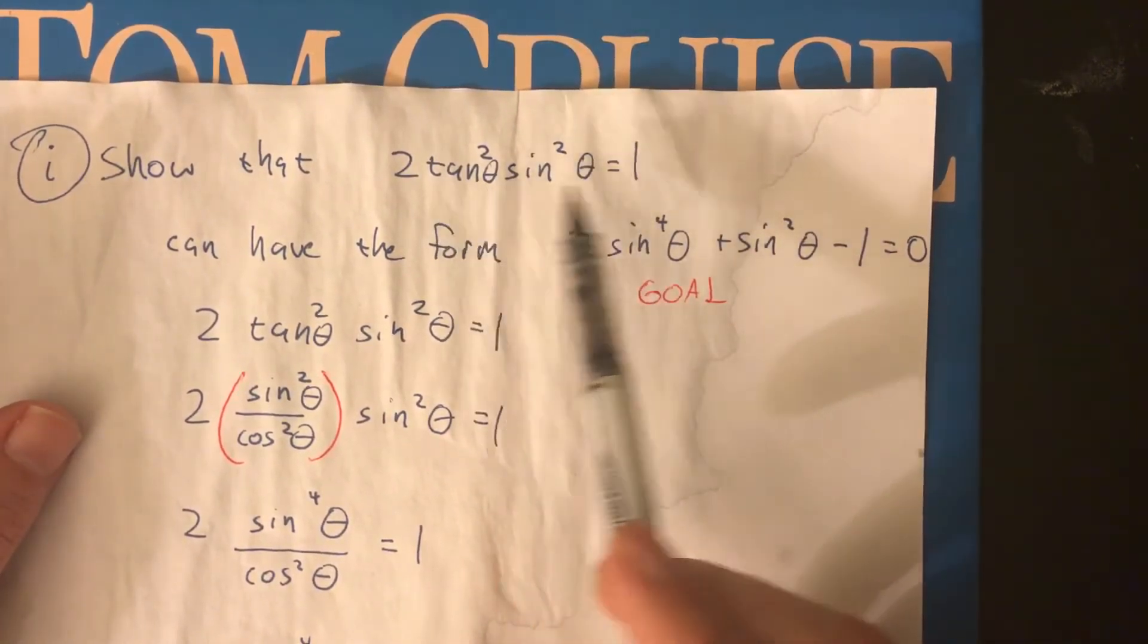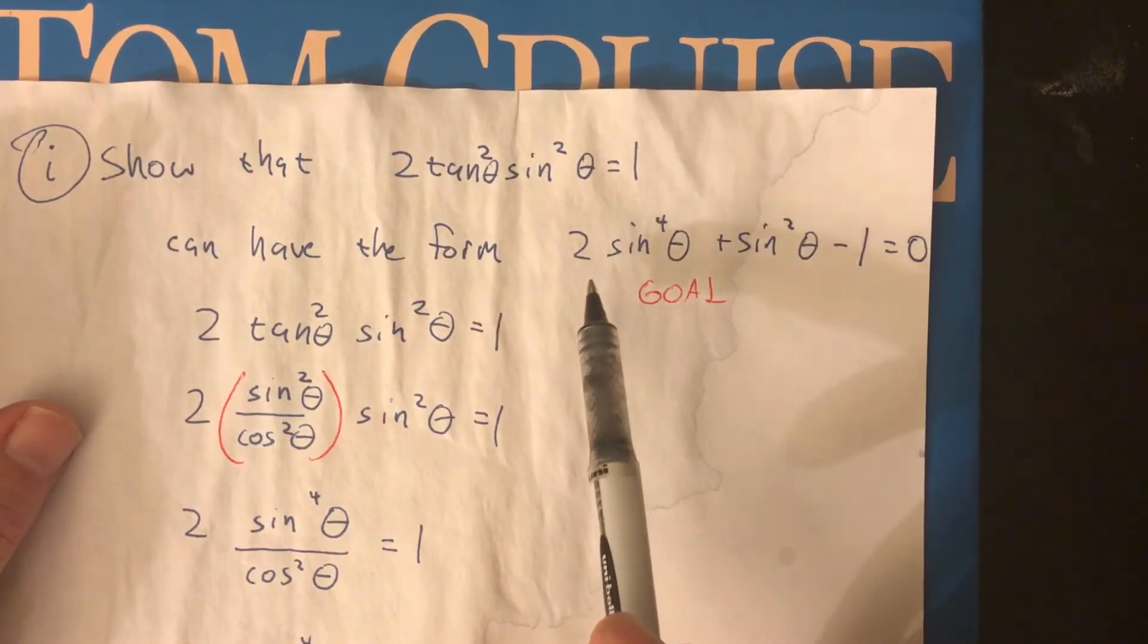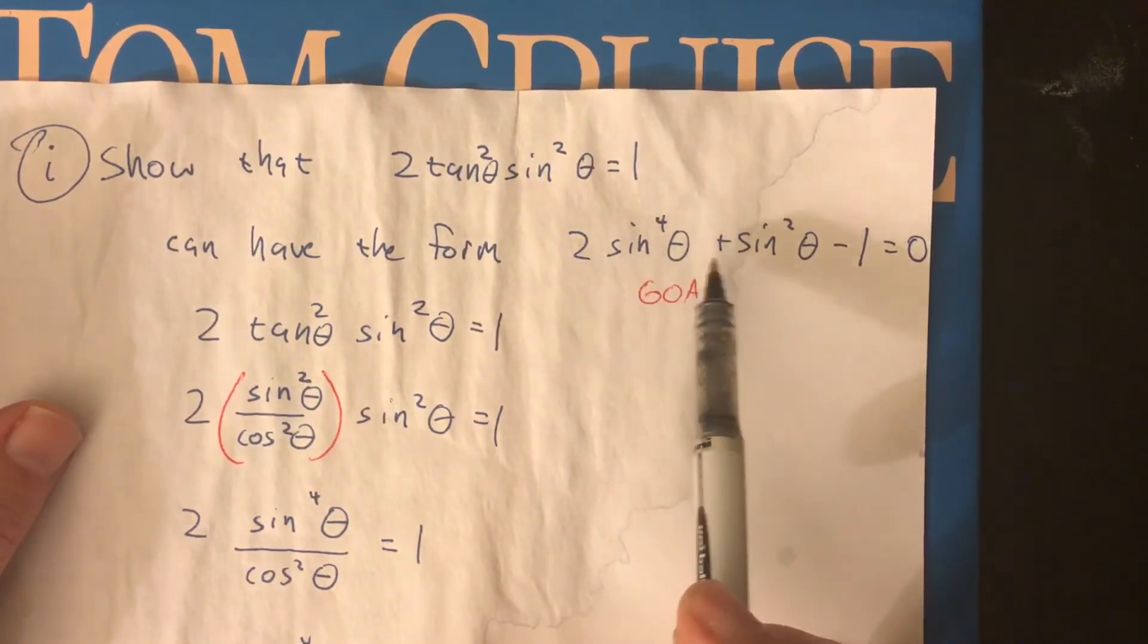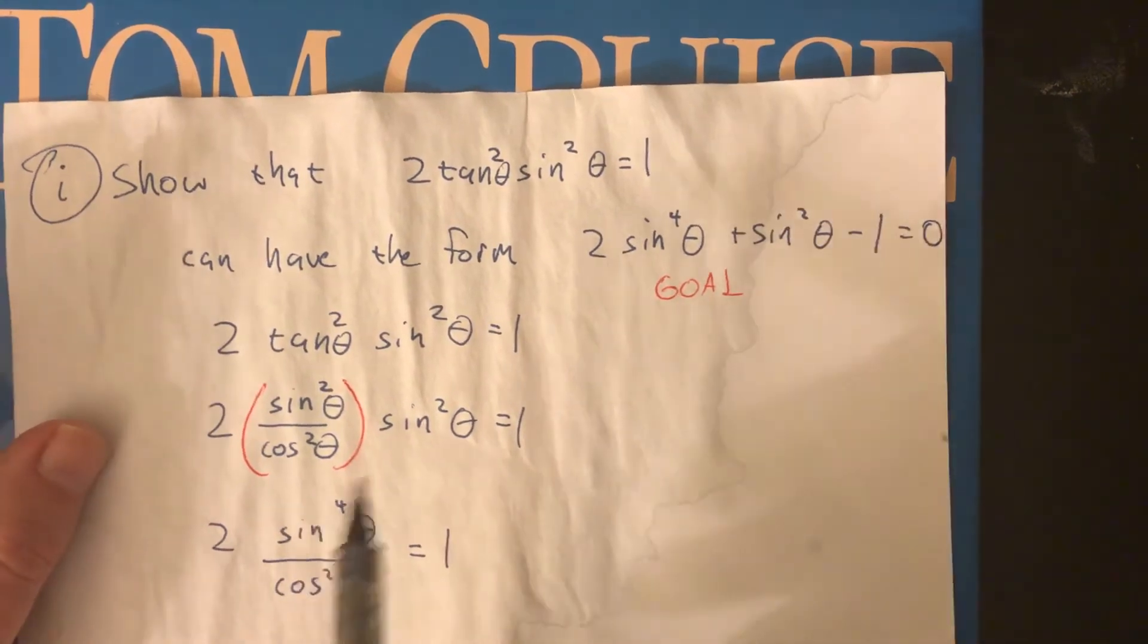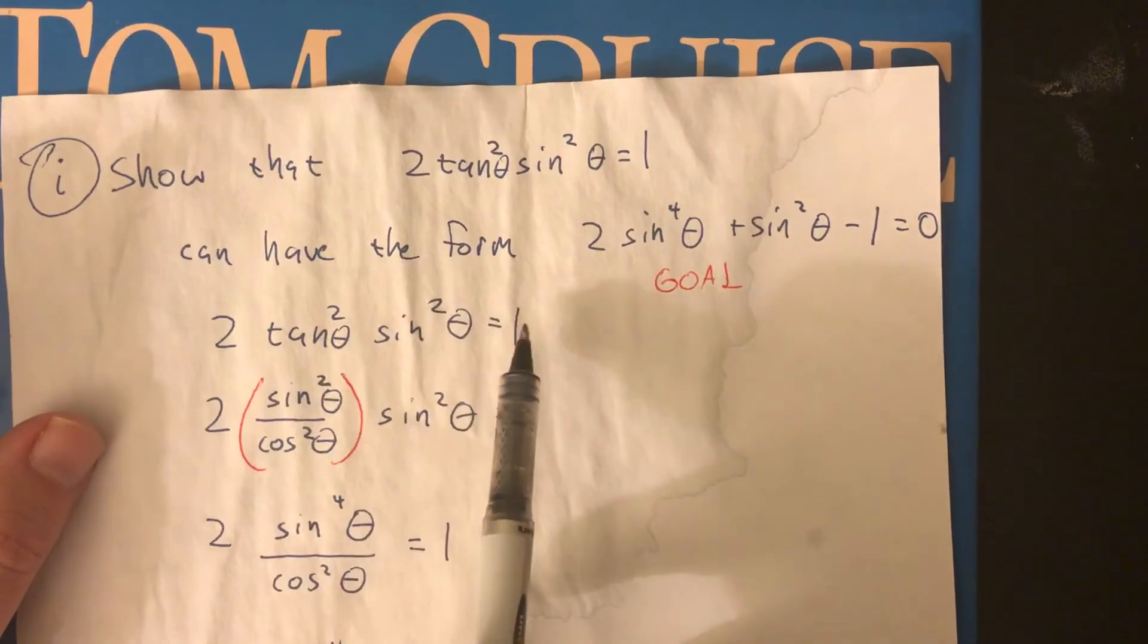So for this one, they actually want you to start off with a full equation, change it, mess with it, turn it upside down, inside out, and in the end, make it look like this other equation over here. So it's a little different.